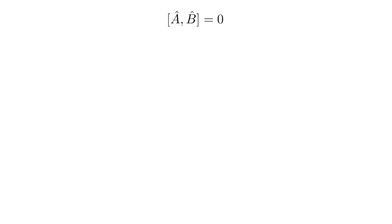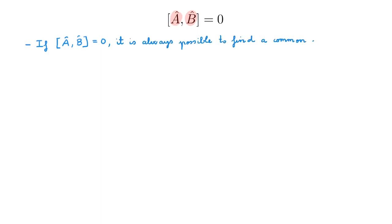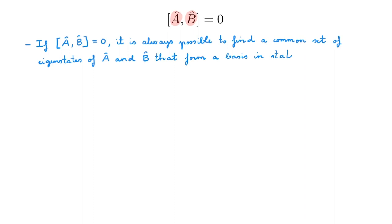The starting point today is this equation here, showing two Hermitian operators A and B that commute. The key result of the video is that if A and B commute, then it is always possible to find a common set of eigenstates of A and B that form a basis in state space. I cannot emphasize enough how important this result is in quantum mechanics. It implies that these two observables can be measured simultaneously, as I discuss in the videos on measurements.